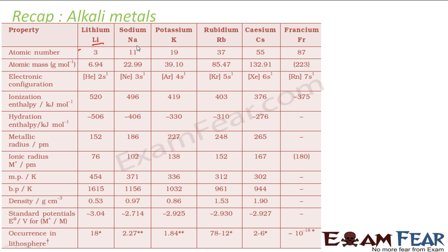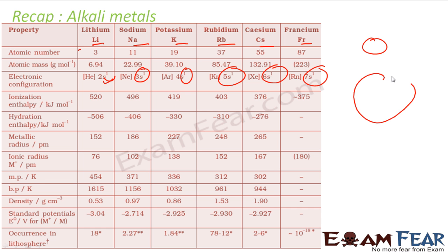Let's do a recap of all the alkali metals: Lithium, Sodium, Potassium, Rubidium, Cesium, and Francium, with atomic numbers 3, 11, 19, 37, 55, and 87 respectively. All have ns1 electronic configuration. As we go down the group: atomic mass increases, ionization energy decreases, hydration enthalpy decreases, metallic radius increases, melting and boiling points decrease, and density increases. The electrode potential also decreases going down the group.